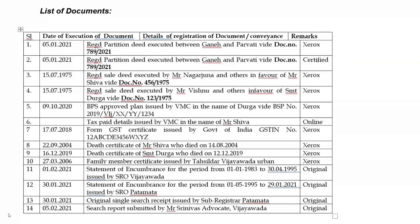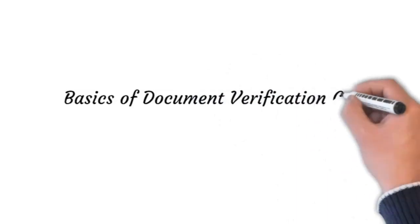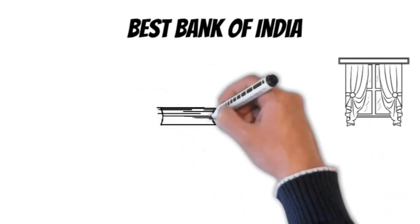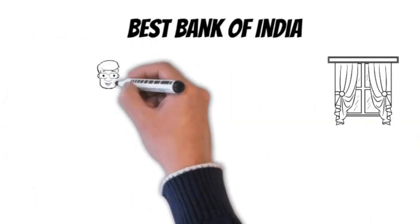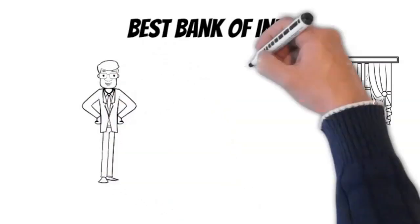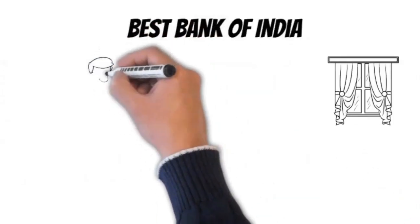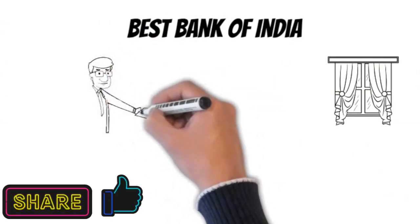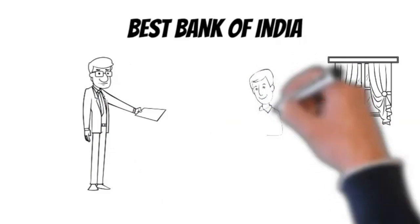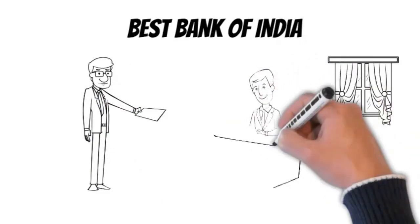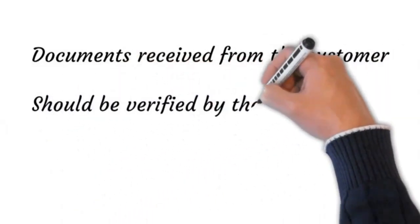You might be wondering why the advocate and not the loan applicant directly. Please understand the basic document verification cycle. The customer will approach you for a loan; you collect all documents from him in original, then prepare a covering letter addressed to the advocate with the list. Either hand it over personally or send by post. Once verification is done and the report is prepared, the advocate hands the documents back to the branch. Under no circumstance should you use the customer as a postman delivering and collecting documents from the advocate. Any documents received from the customer must mandatorily get verified by the advocate.